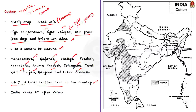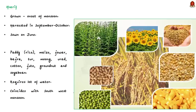India ranks second in the world in cotton production, after China. Now, having known that cotton is a Kharif crop, let us learn about the Kharif season and the other two cropping seasons of India. India has three cropping seasons: Kharif, Rabi, and Zayad. Cropping seasons are the time periods during which a particular crop is grown.